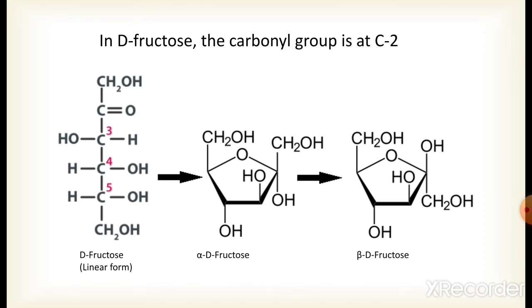A point to remember: in aldoses — meaning glucose, galactose, and all other aldehyde sugars — the anomeric carbon atom is carbon number 1, while in ketoses, the anomeric carbon atom is carbon number 2.